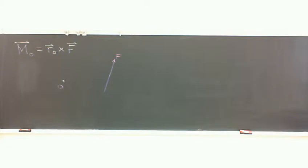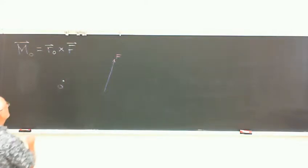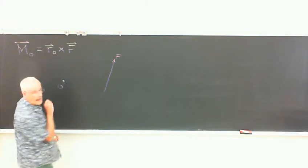Does R0, the vector that locates F and O with respect to each other, go from O to F or from F to O? O to F - every time. It goes from O out. That's set. We're not going to negotiate that.